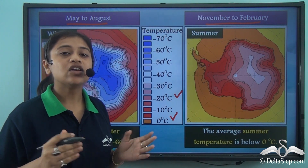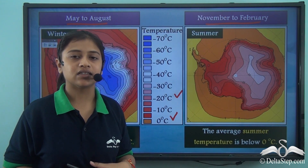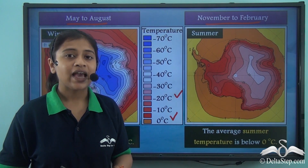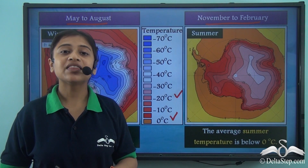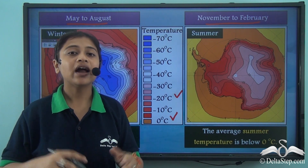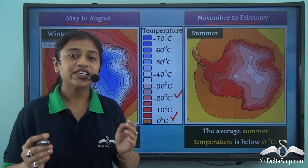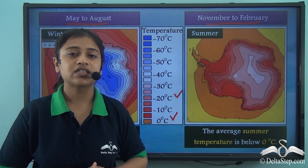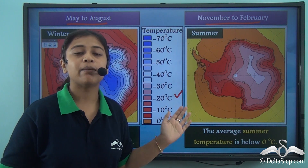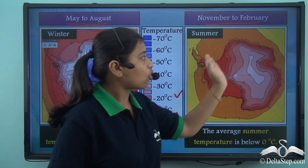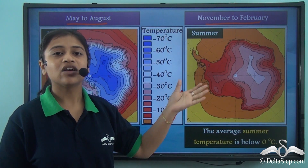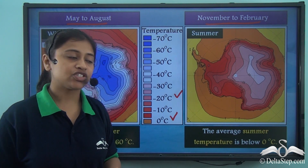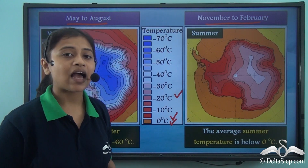The temperatures are not the same during summer season. The summer season, which is short and usually exists for a few weeks or a month, experiences temperatures higher than the winter season. The core of the continent experiences temperatures between minus thirty degrees Celsius to minus twenty degrees Celsius, while the coastlines have temperatures around zero degrees Celsius and more.